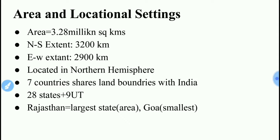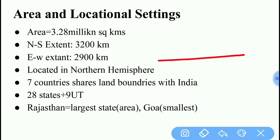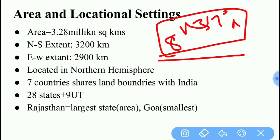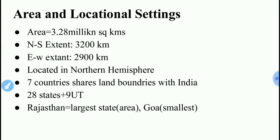India is located in the northern hemisphere. The latitudinal extent of India is from 8 degrees to 37 degrees north, which means India is totally located in the northern hemisphere.